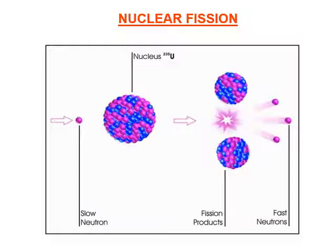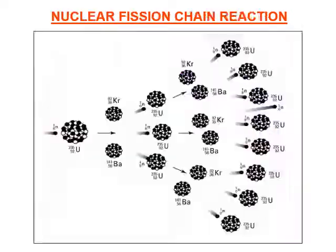In nuclear fission, a heavy nucleus is broken into smaller nuclei, and three fast neutrons are emitted, which again combine with other heavy nuclei, producing more products — this is a chain reaction. For example, uranium splits into barium and krypton; the krypton combines with another neutron along with uranium to form barium and krypton again. Three neutrons are produced in each fission, sustaining the large chain reaction.